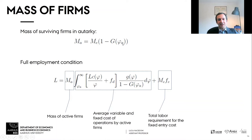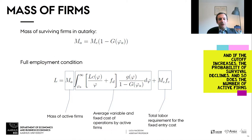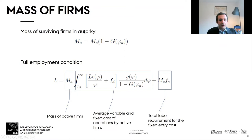If there are 100 entrants and the probability of surviving is 70%, there are 70 surviving firms. How do we pin down these two masses of firms? Just like in the Krugman model, we were finding the number of firms by using the full employment condition. Here we're going to pin down the mass of firms — because here we're thinking of a continuum of firms — using the same condition.